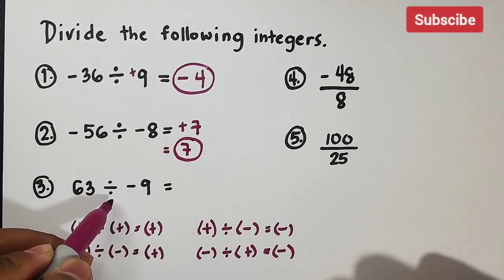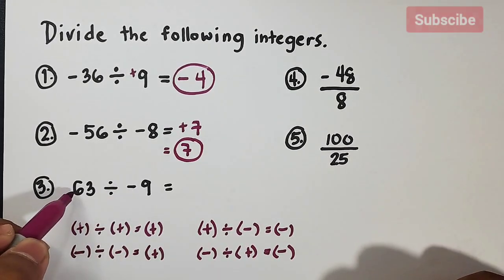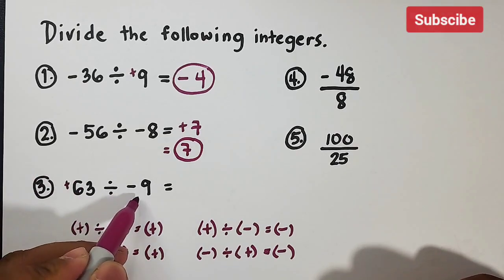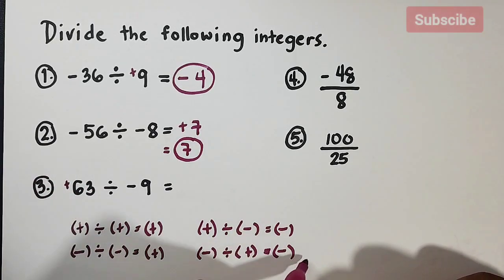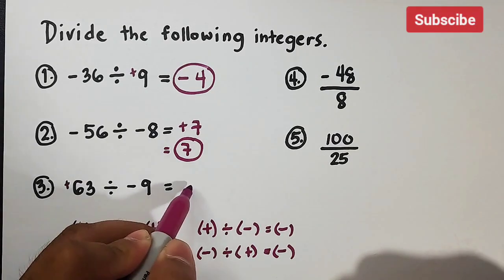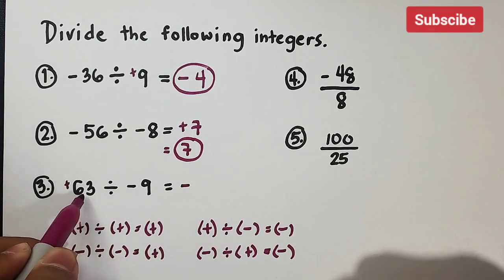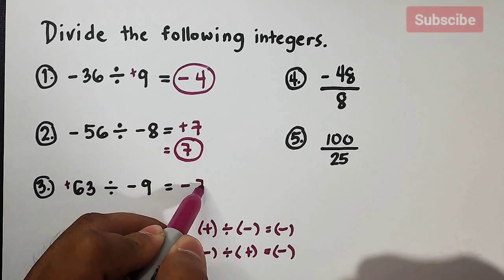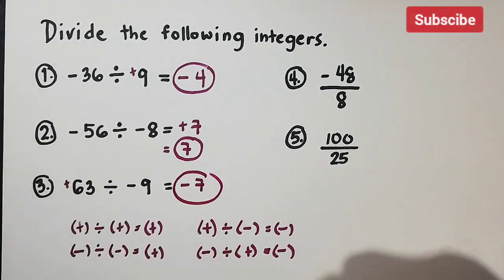Now item number three: 63 divided by negative nine. 63 is positive and nine is negative — different signs — so the quotient is negative. 63 divided by nine equals seven, so the answer for number three is negative seven.